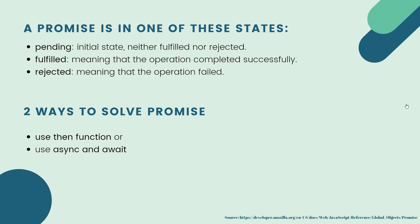To handle promises we can use then and catch functions — then is the positive block and catch is the negative block — or we can use async and await, which are JavaScript ES6 features. In this tutorial we will mostly stick with async and await. Most tutorials use then functions, which can look messy and be complicated to understand, whereas async and await reduces the number of lines significantly.